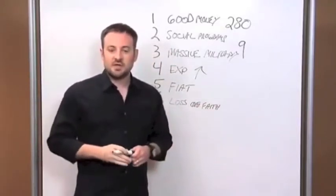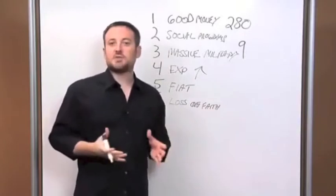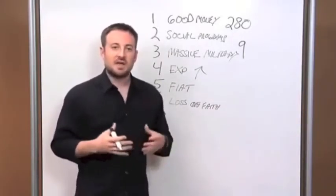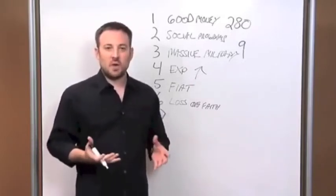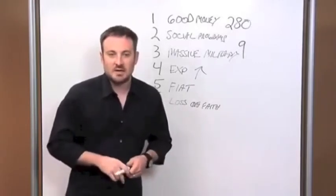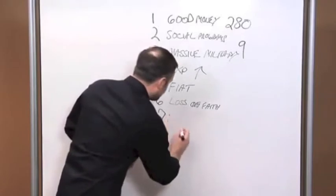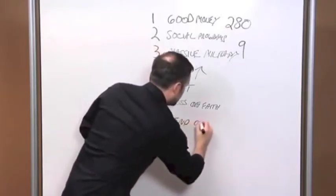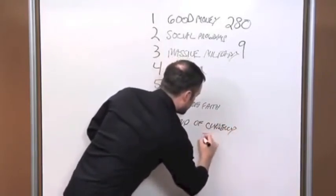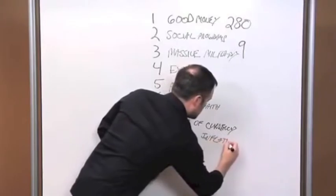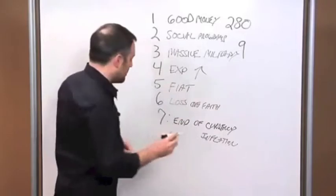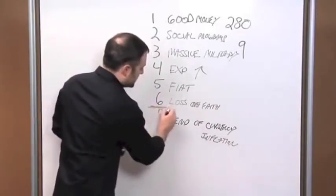And then finally, that brings us to stage number seven. At this point, an en masse movement out of the currency into precious metals and other tangible assets and commodities takes place. The currency collapses and massive wealth is transferred to those who had enough foresight to position their money into the right asset class beforehand. We're going to put end of currency and inflation. So these are the seven stages, and we are right here between stage number six and stage number seven.